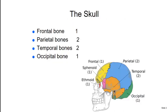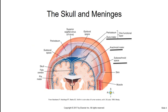The skull covers and protects the brain. It is composed of bony plates connected by a thin membrane called a suture. The major bones of the skull are: one frontal bone that provides structure for the forehead and orbits; two parietal bones on either side of the skull that provide structure for the sides and roof of the cranium; two temporal bones on either side of the skull contributing to the sides of the cranium; and one occipital bone providing structure to the back of the skull.